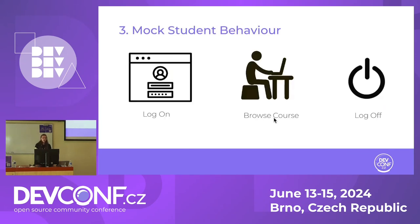Then we had to mock the student behavior. There are three main behaviors we needed: the student logging on — deciding whether they're male or female, giving them a name, a picture, an ID, and assigning them to one of the pre-approved courses. Then simulating them browsing the course, changing between labs, looking at different slides. We looked at the list of cards, chose one randomly, and since the course is a tree-like structure, picked something from that tree and updated it to point there. Finally, the student eventually logs off — so we have that behavior mocked as well.